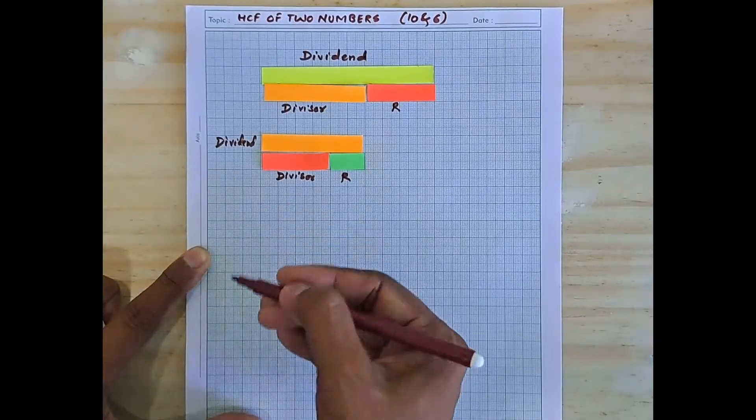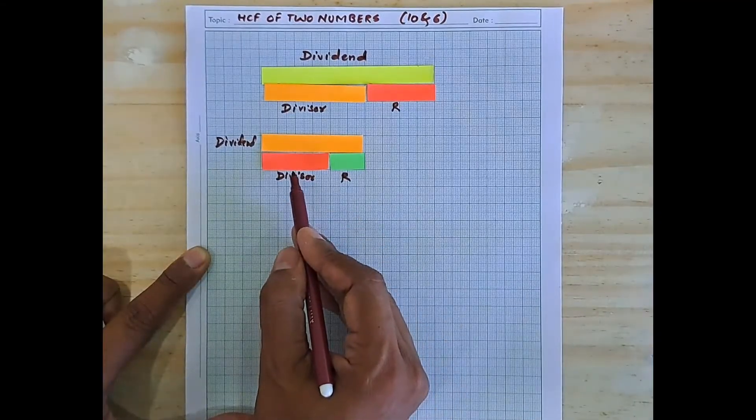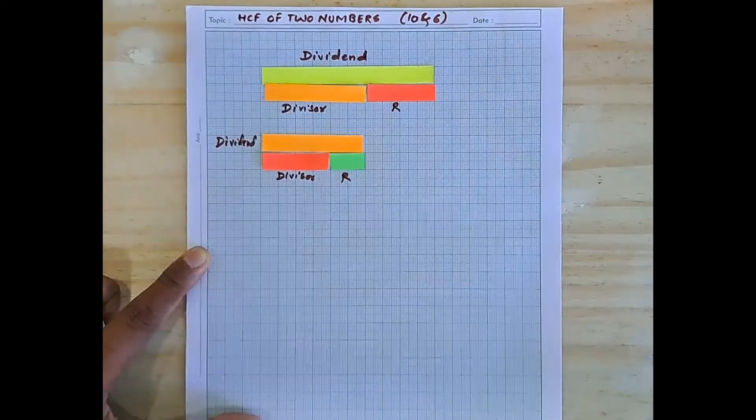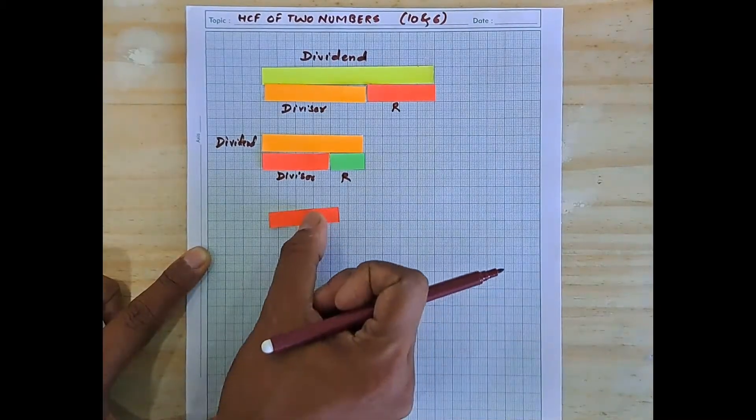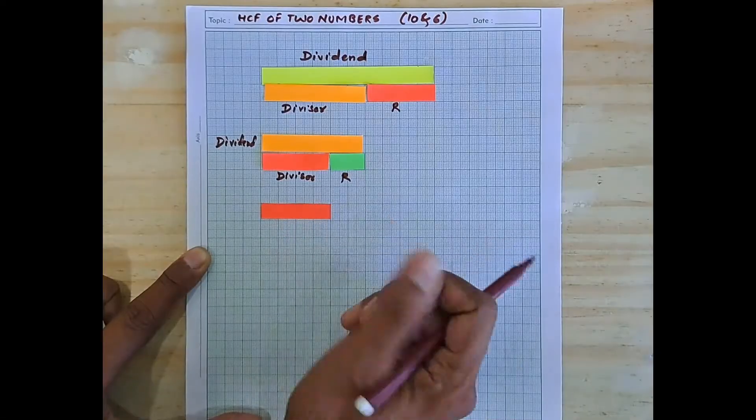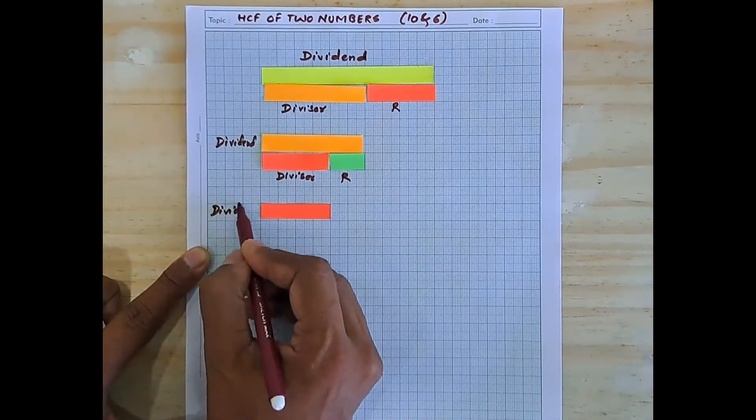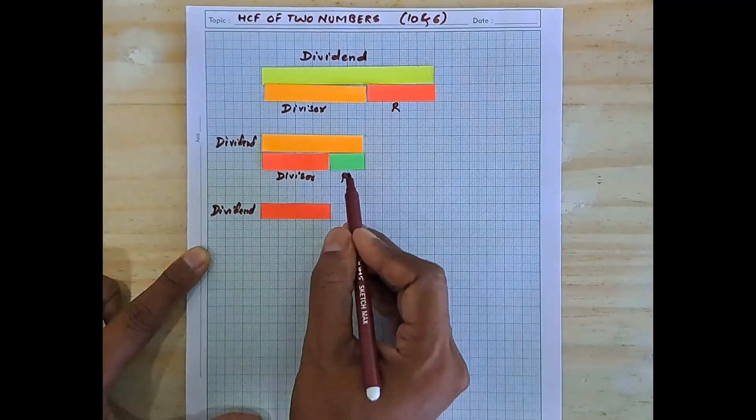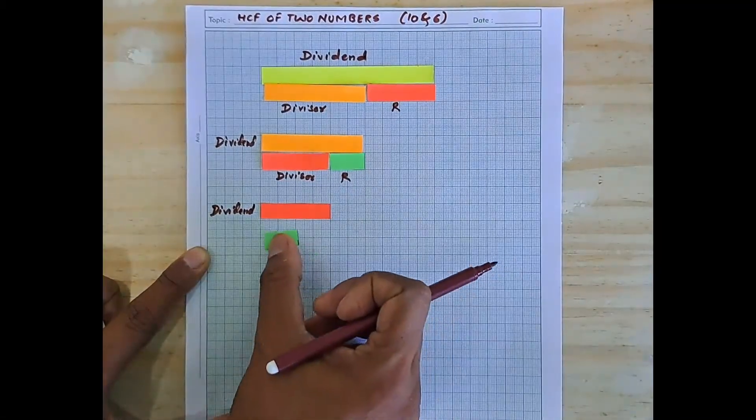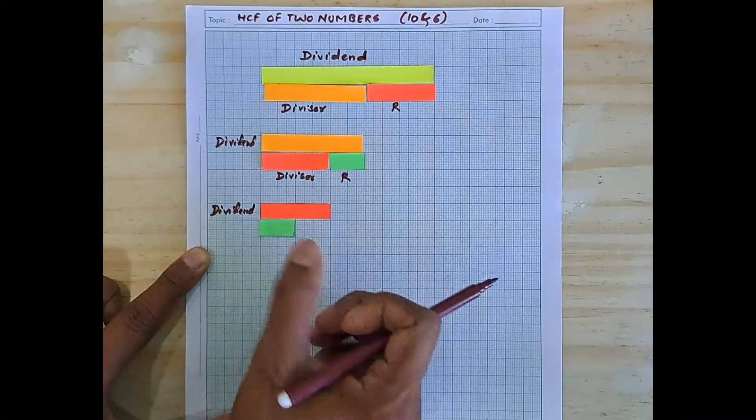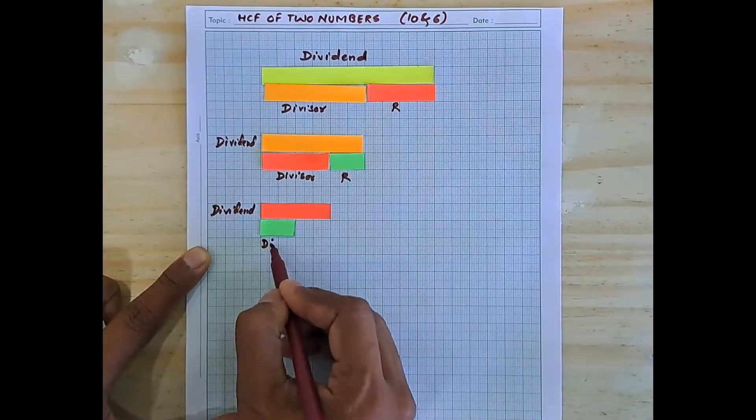So we need to perform another step. Now the divisor was 4, so we will have in the next step a strip measuring 4 centimeters. This will be my new dividend. And the remainder was 2. So the new divisor will be 2. This is the new divisor.